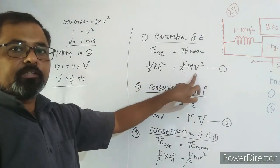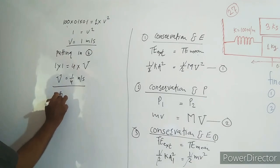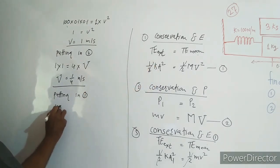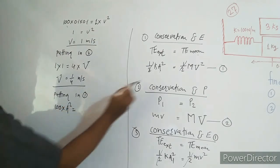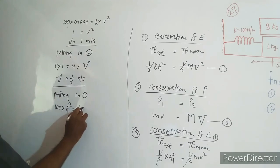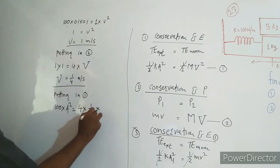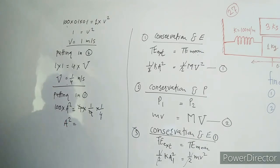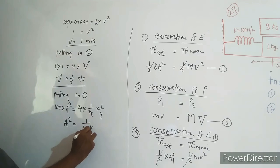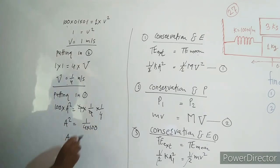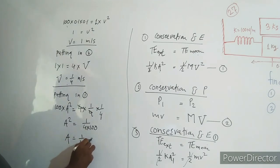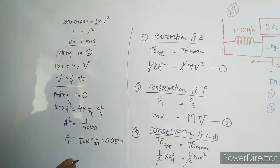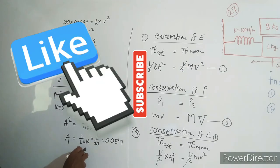Now putting v = 1/4 m/s into equation 1 (energy conservation for the second case): (1/2) × k × A² = (1/2) × 4 × (1/4)². So 100 × A² = 4 × (1/16) = 1/4. Therefore A² = 1/(4 × 100) = 1/400. So amplitude A = √(1/400) = 1/20 = 0.05 meter. The amplitude of the combined system is 0.05 m.